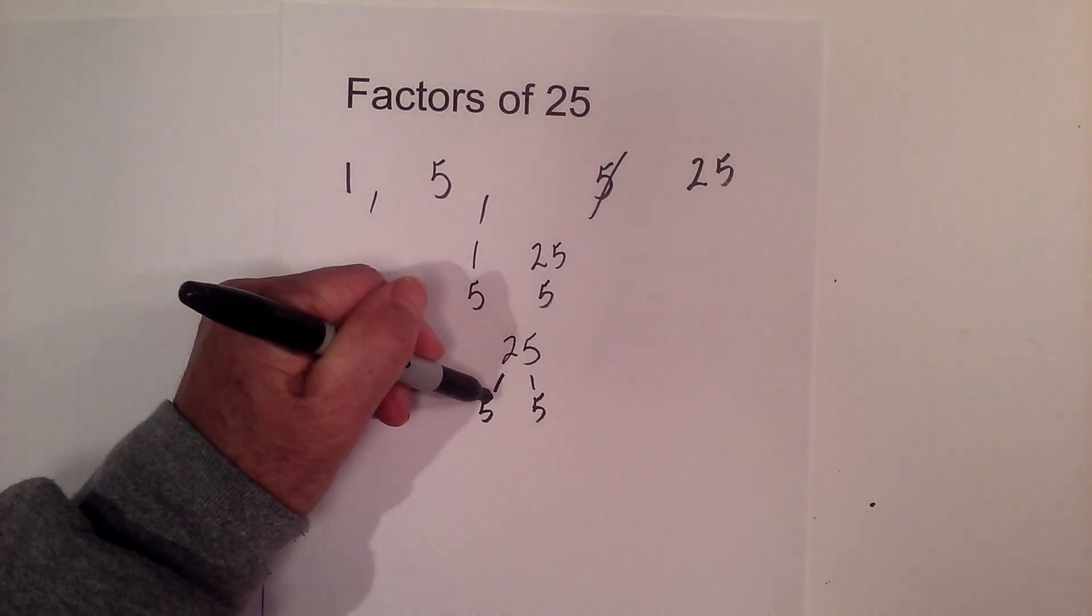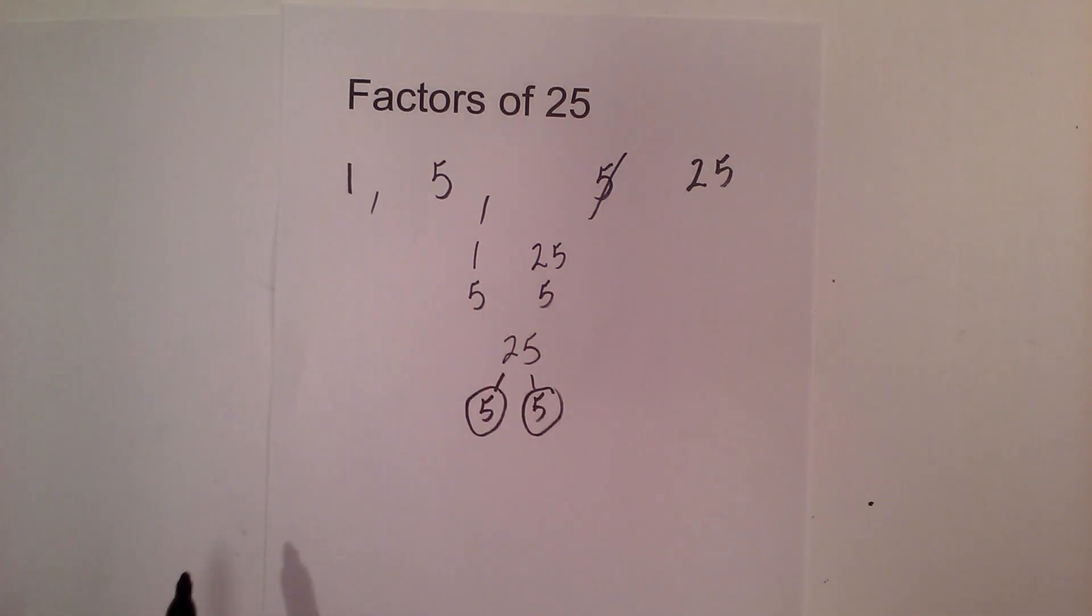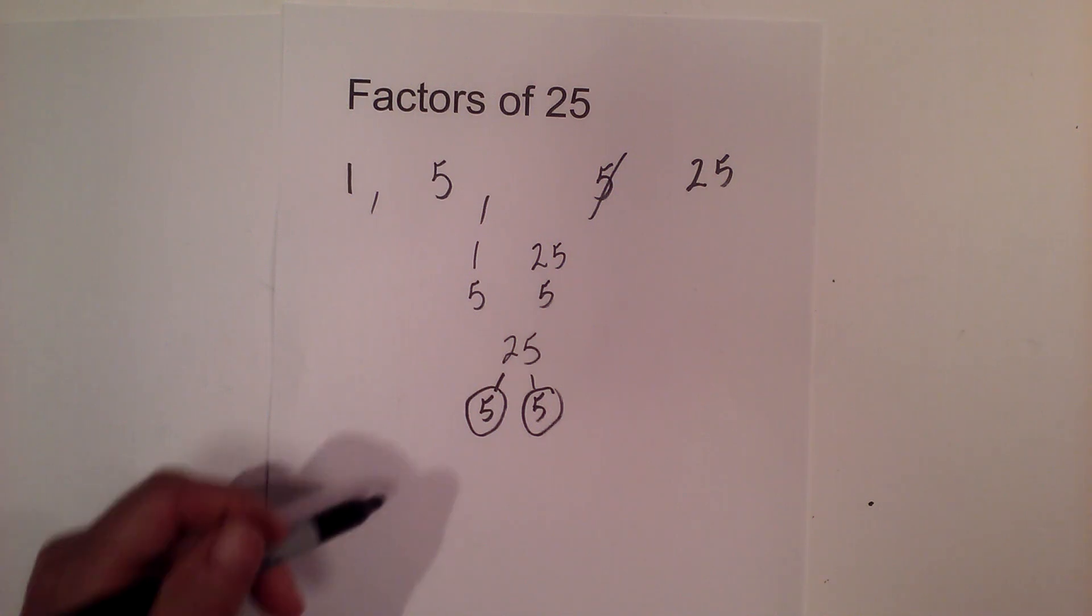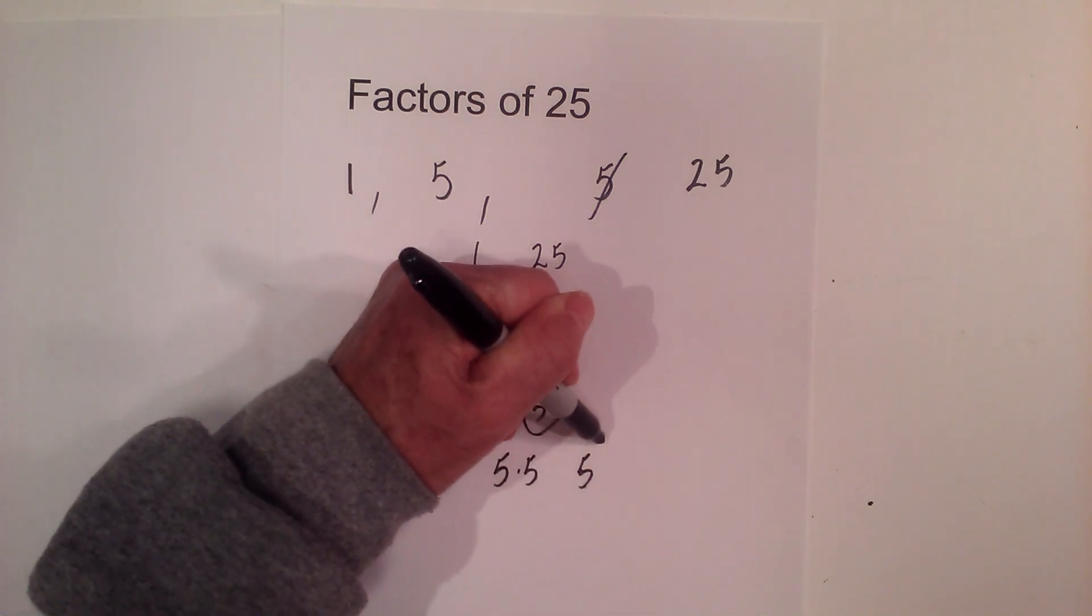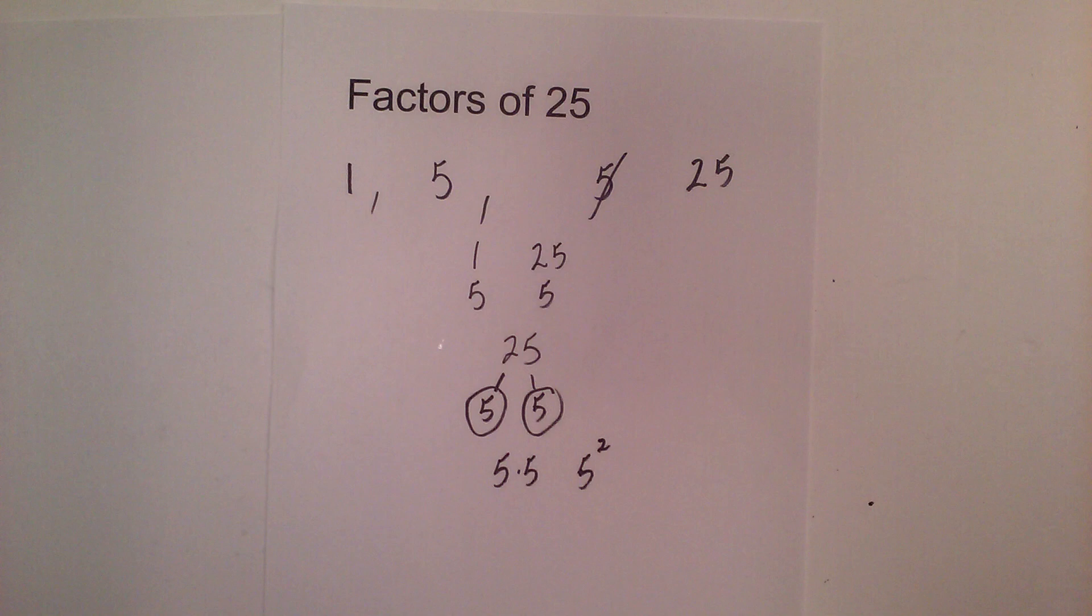I will circle both fives because they are prime, so I'm already down to all prime numbers and I'm finished. The prime factorization of 25 is 5 times 5, or you could rewrite that as 5 squared.